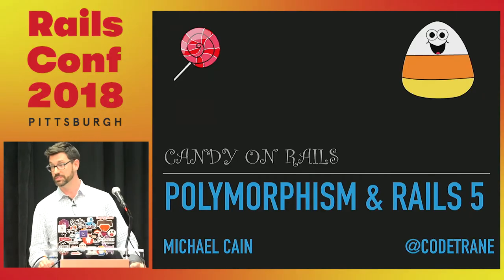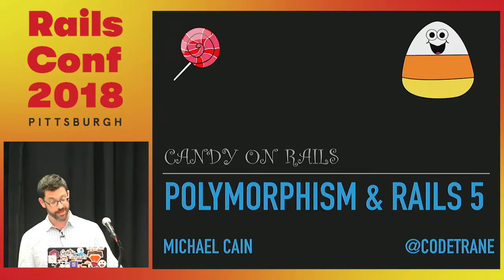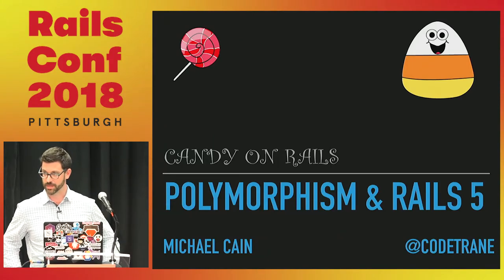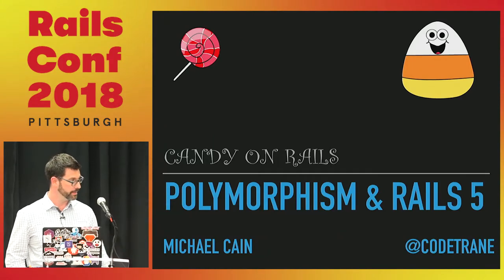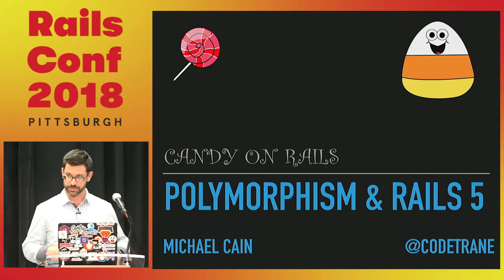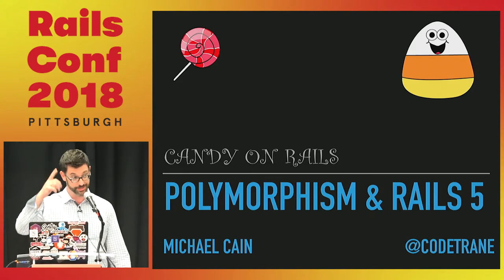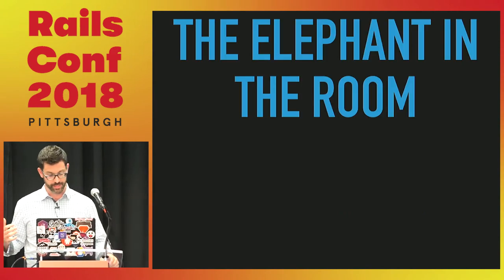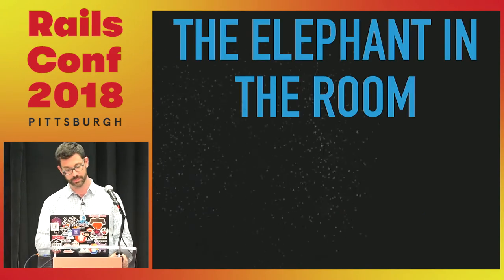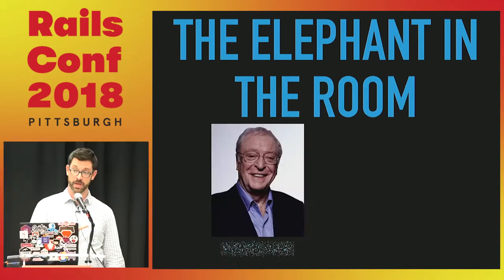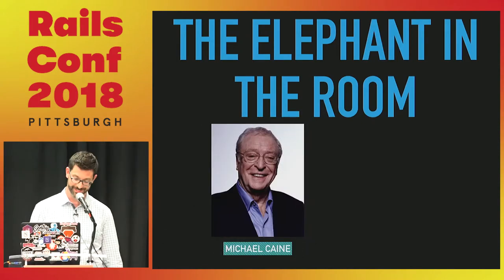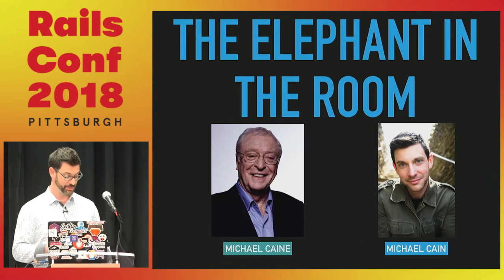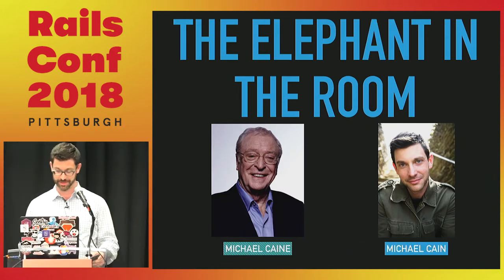Welcome to Polymorphism and Rails 5. I'm Michael Caine. If you're interested in getting with me on Twitter, Codetrain is my handle. I was a musician for a while, so if any jazz heads are in the room — we must address the elephant in the room of course. This is Michael Caine. I am Michael Caine. I do a pretty good impression, so I'll see if I can bust that out later on.